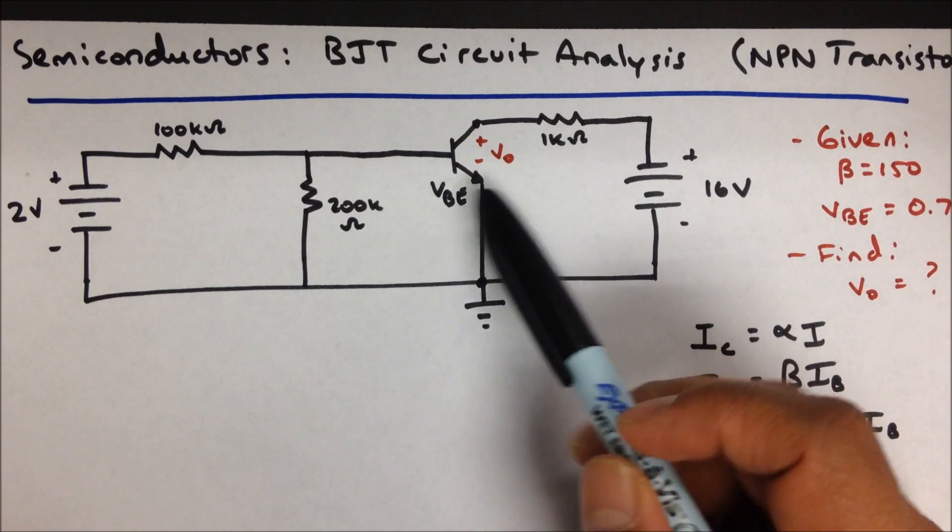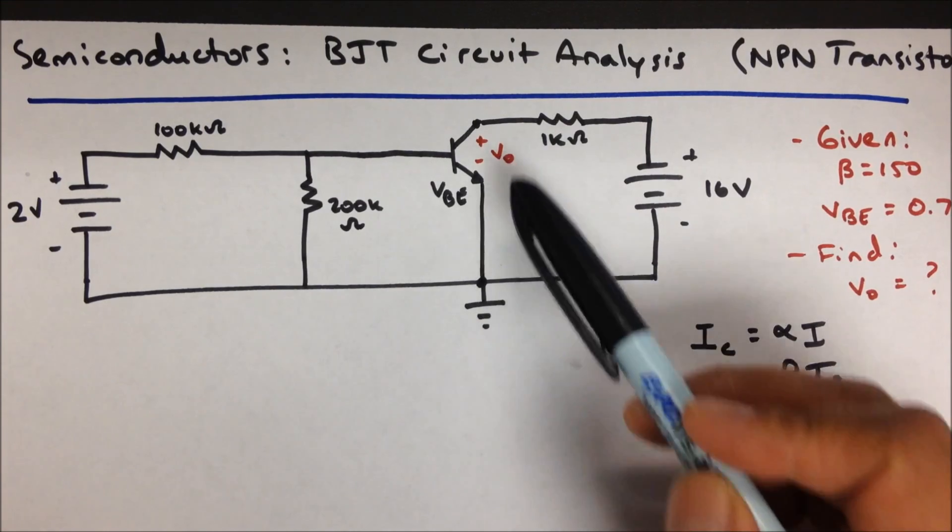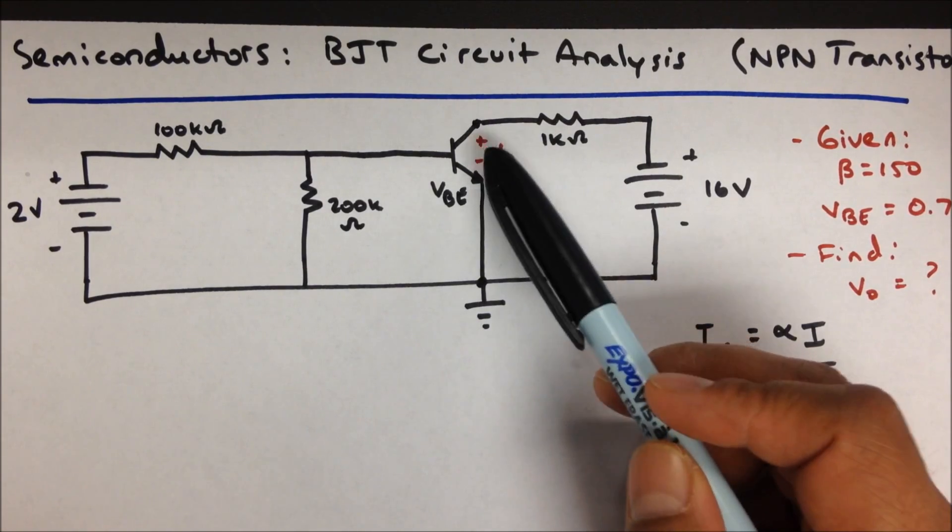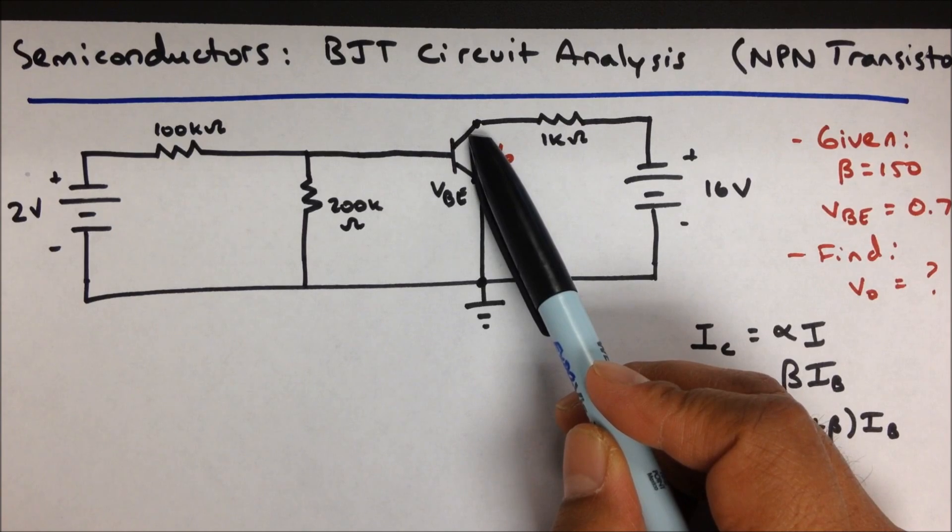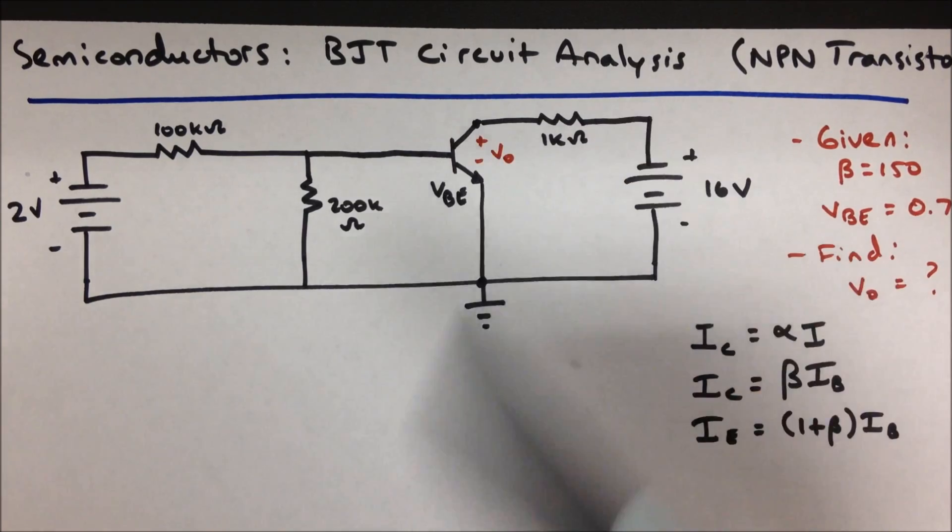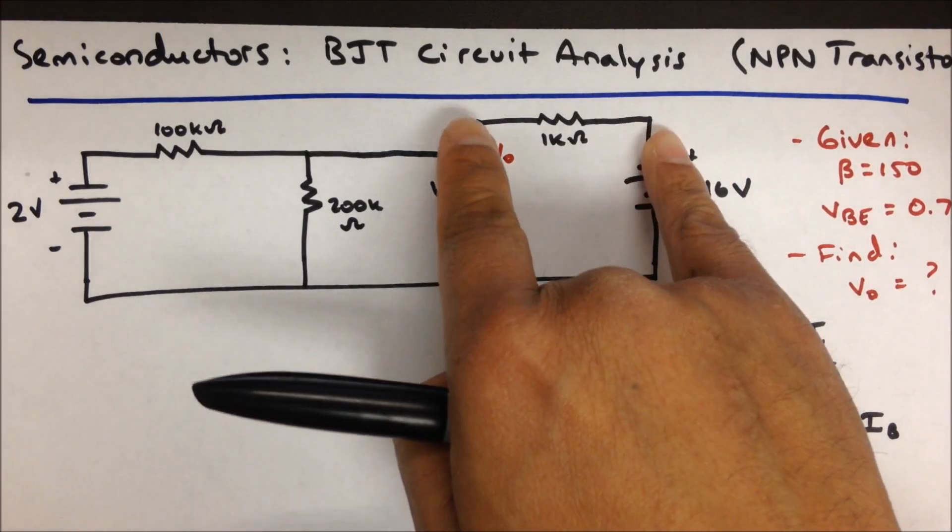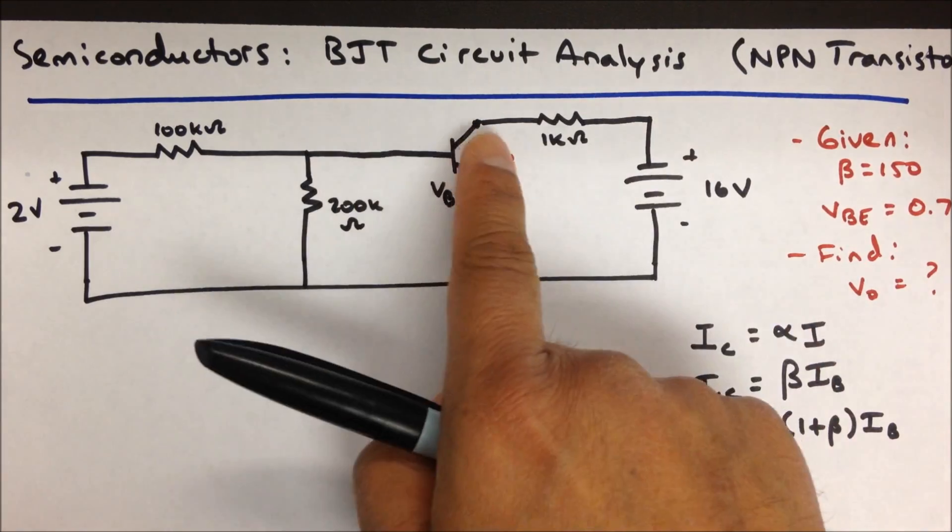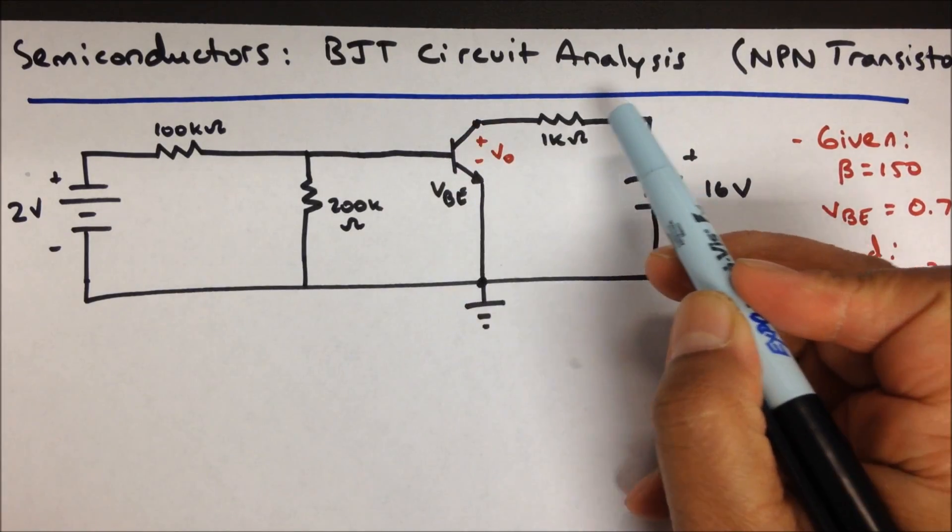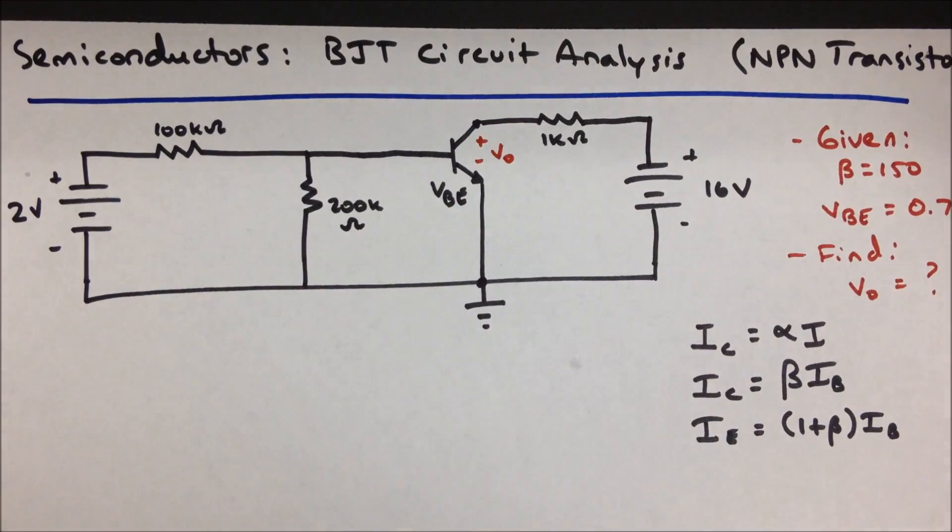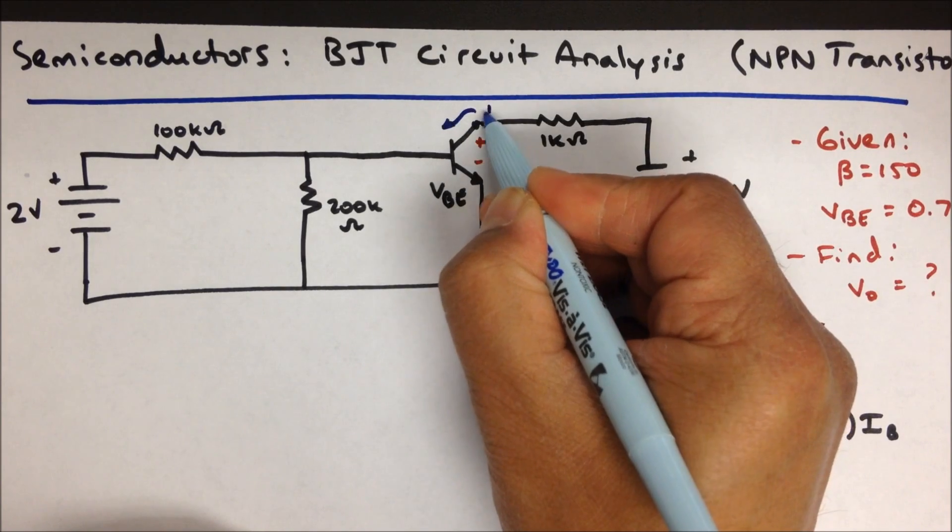One thing you can notice with this circuit is that the emitter is connected straight to ground. To find V0, this voltage, is really to find that node voltage. We know this node is at 16 volts. If we can know this voltage drop, we would know what that voltage is. We can figure out what this voltage drop is if we knew the current flowing through there, if we could figure out what IC is, the collector current.